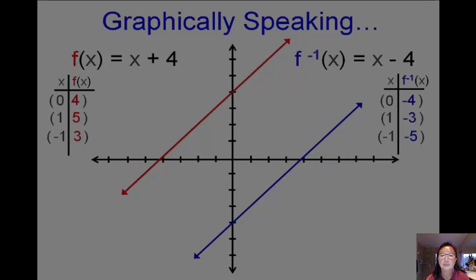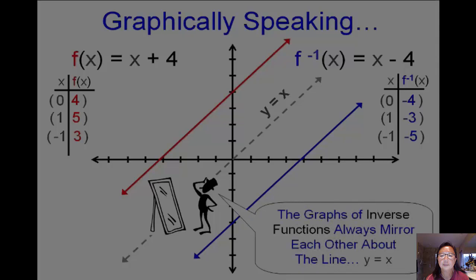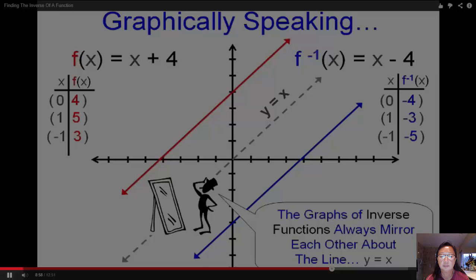Now, what will always happen when you graph a function and its inverse function, since one is the interchanging of x and y, is that they will be a mirror of each other about the line y equals x. I could actually fold this graph on the dotted line, which is the graph of the line y equals x, and the red would end up on top of the blue. That will always happen. So the graphs of inverse functions always mirror each other about the line y equals x. Okay, here's what I need you to write down: The graphs of inverse functions always mirror each other about the line y equals x. I need you to write that down in your notes. Please pause the video now.